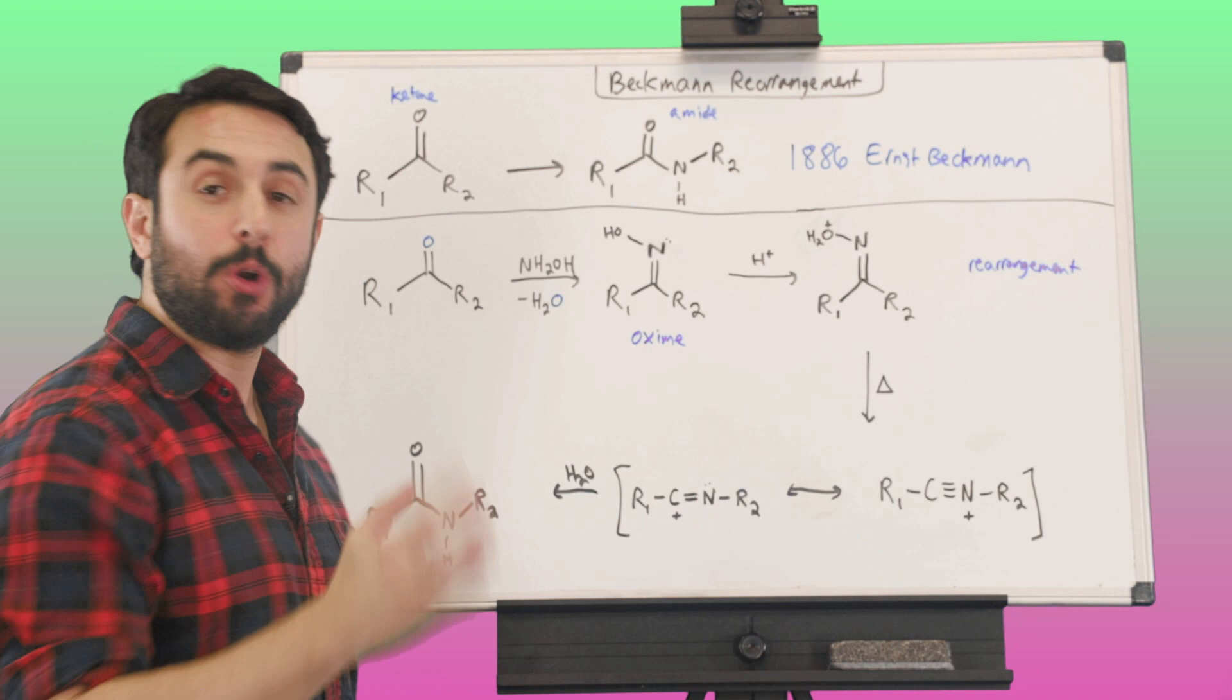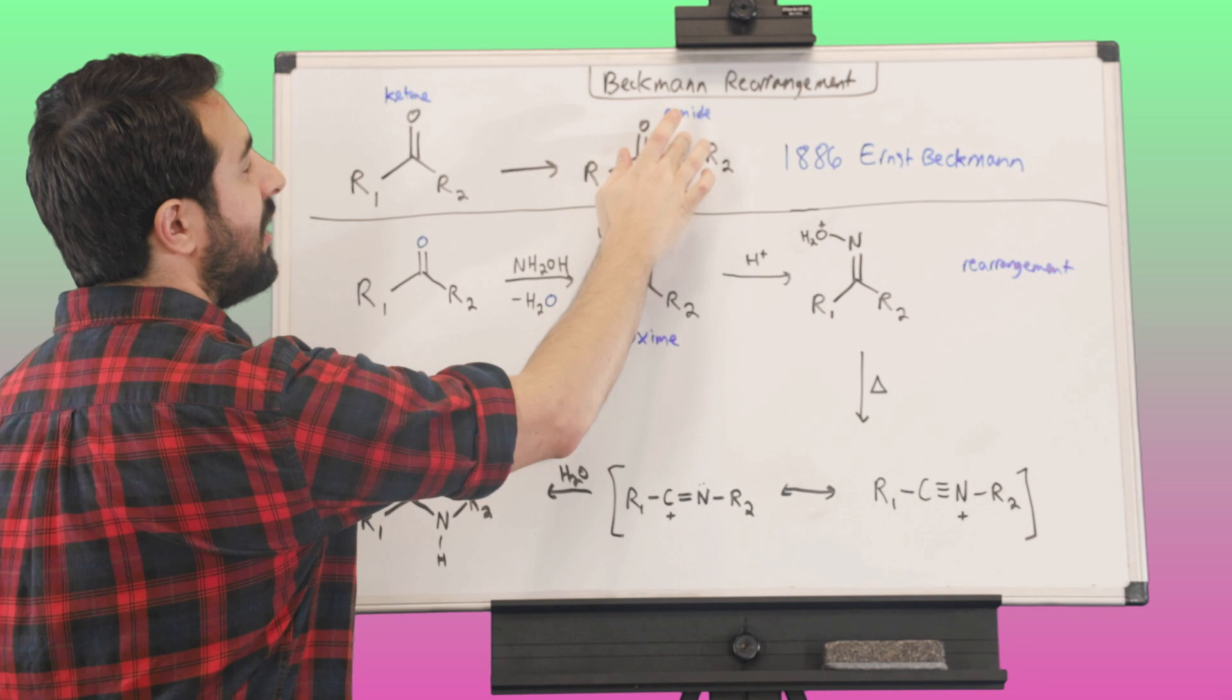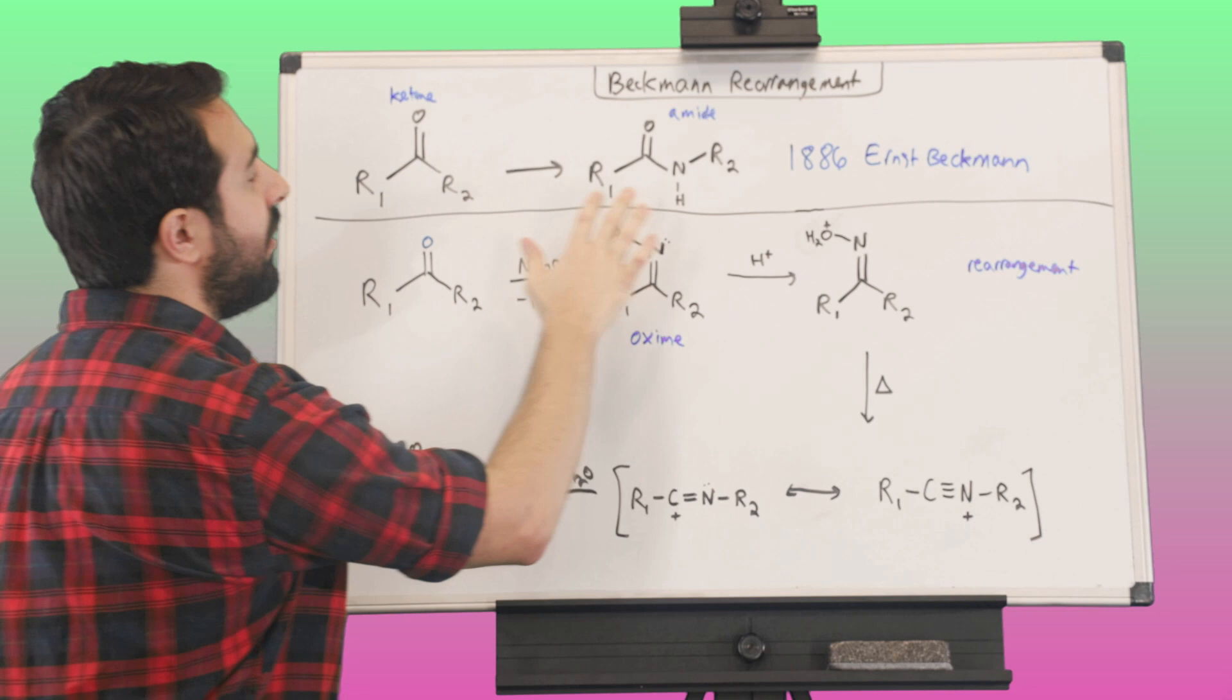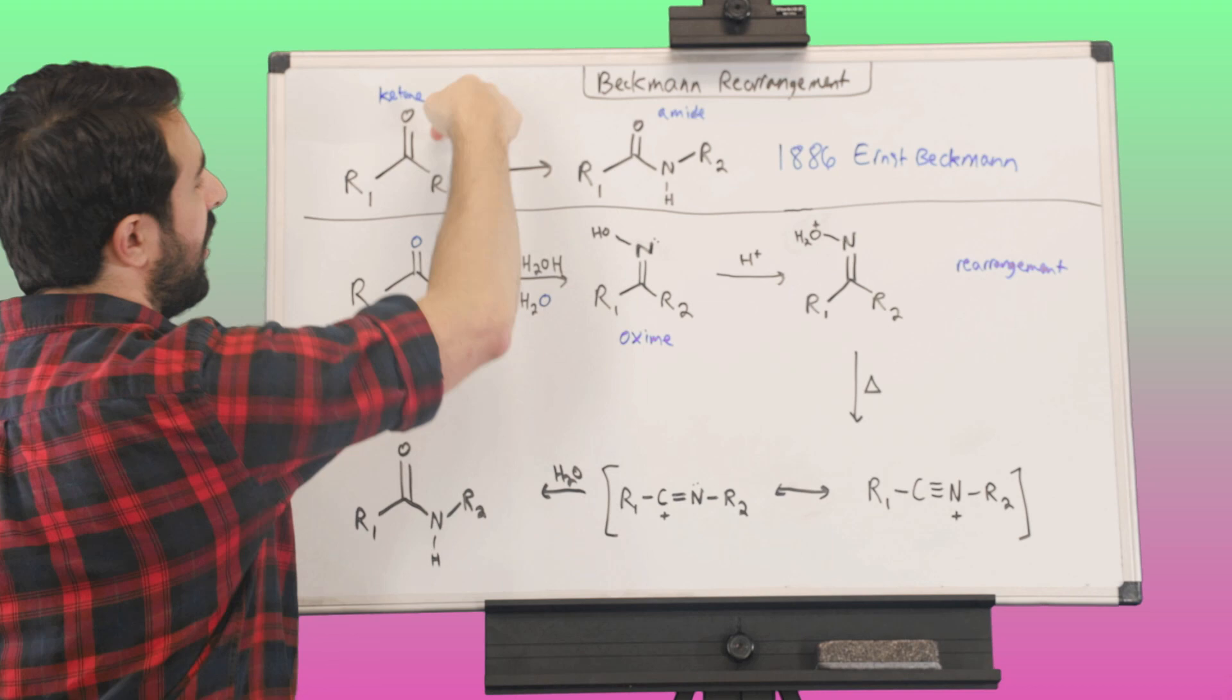The purpose of this reaction is to transform a ketone into an amide. So you can see we've got two R groups here, R1 and R2 on this ketone. And then we're going to the amide, which essentially means that all we've done is we've taken a nitrogen atom, and we've inserted it into one of those carbonyl-carbon alkyl group bonds.